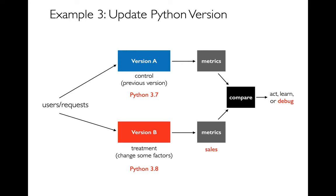Another use case — where it's hard to imagine ethical concerns — is upgrading from Python 3.7 to Python 3.8. Ideally that should make no difference, but it's possible bugs in your code only surface when you switch to 3.8. What people often do is run both at the same time: some code on 3.7, some on 3.8, and then compare. Maybe when switching to 3.8, something breaks for all Internet Explorer users. These comparisons let you catch that and say you don't want to make that switch yet.